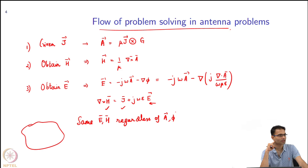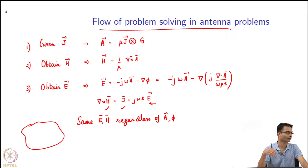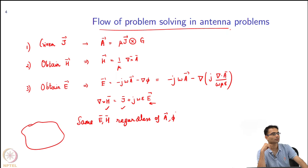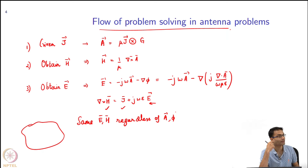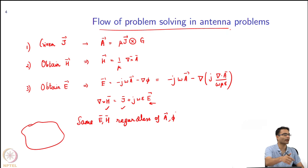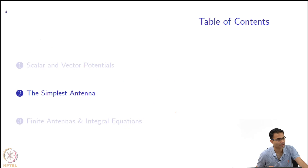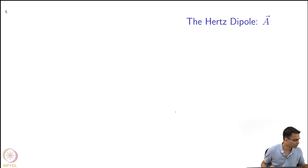What we will do next is look at a very simple antenna called the Hertz dipole, where the J term is extremely simple. This will just give us practice in the flow of derivations. The Hertz dipole is an antenna of very very small dimension, so the current over it is not a function of space — it is just some constant value. That is why steps 1, 2, and 3 can be done easily. In real-life problems, you do not know the current on the antenna itself, so there is a step 0 where computational EM helps us.